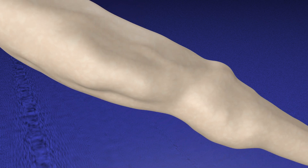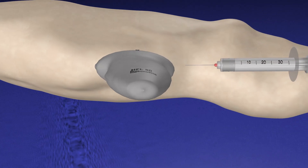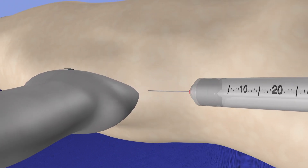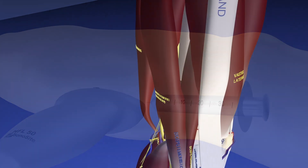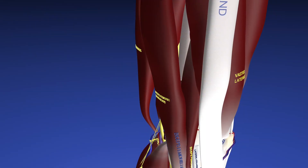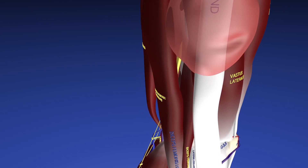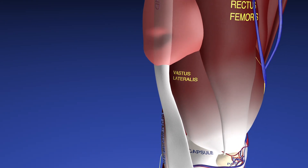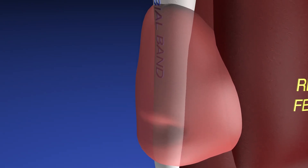Now we're bringing the lower extremity into a supine position, and here's our probe. We're going to approach at the very inferior aspect of this lesion to use gravity to help collect as much fluid as possible. Here we can see the normal anatomy of the lateral thigh — the iliotibial band right above the vastus lateralis — and here's our Morel-Lavallée lesion.